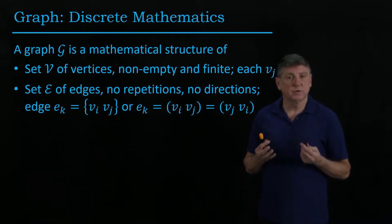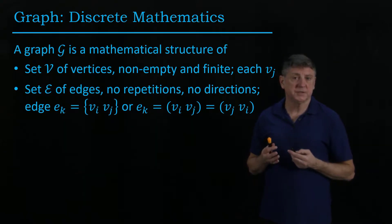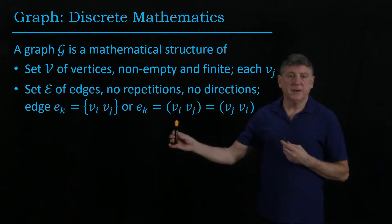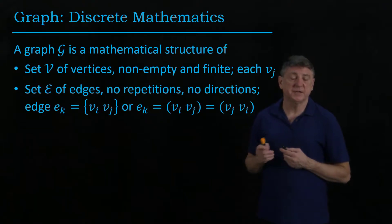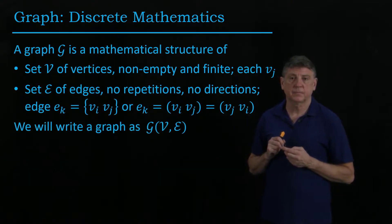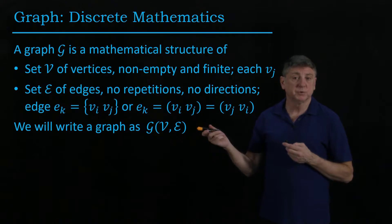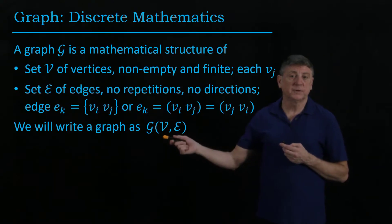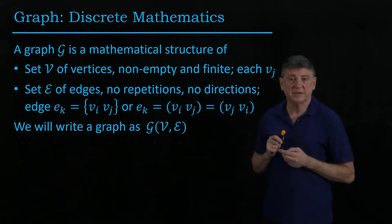We're also going to require that there be no repetitions, so if a pair IJ appears once in a list of edges, it can't appear again. We'll write a graph as the symbol G, and we'll refer to it as having vertices and as having edges.